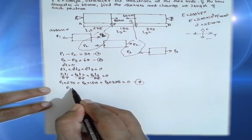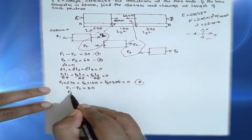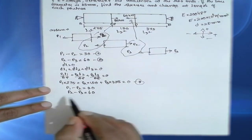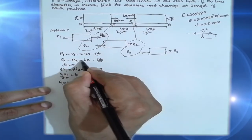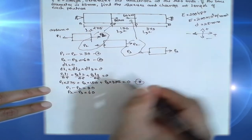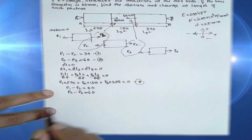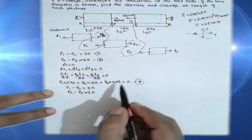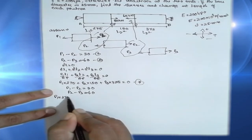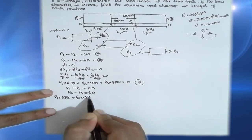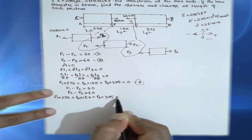The three equations are: equation one: P1 − P2 = 30 kN; equation two: P2 − P3 = −60 kN (noting the direction of the 60 kN force is negative); equation three: 275·P1 + 150·P2 + 375·P3 = 0.